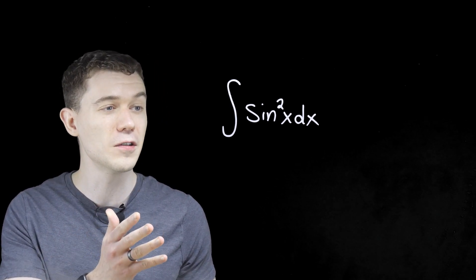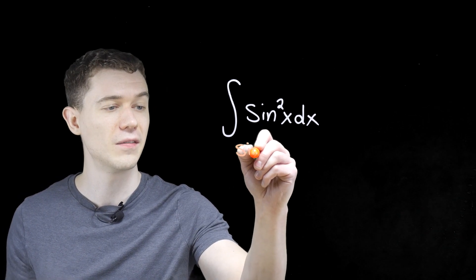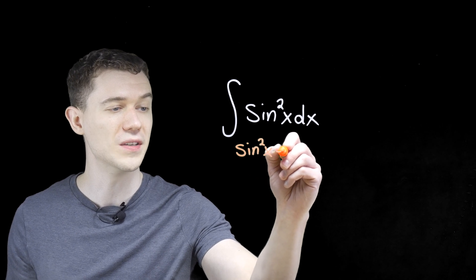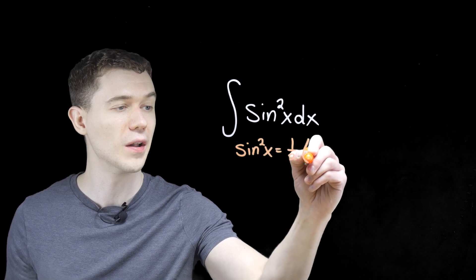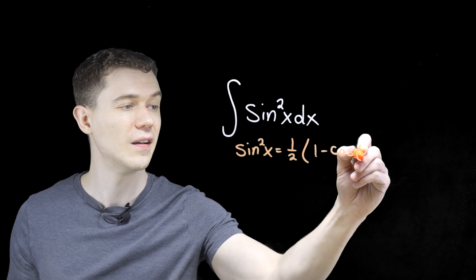Instead, for this integral, we're going to take advantage of a trig identity. And there's a nice trig identity for sine squared that we'll use. This is one-half the quantity of one minus cosine of 2x.